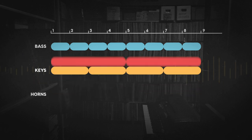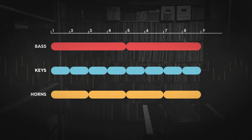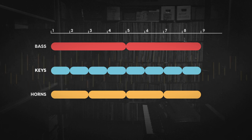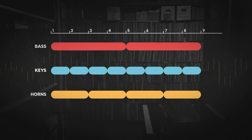And now invert it. Make your bass line a four-bar loop, make element B a two-bar loop, and then make element A a one-bar loop.